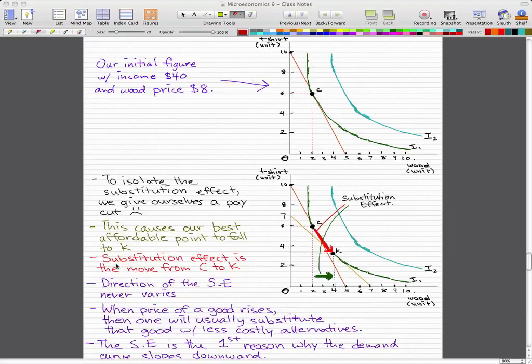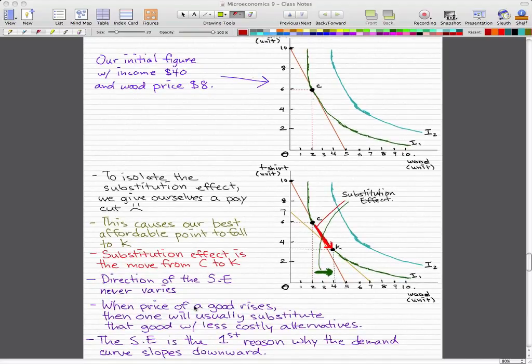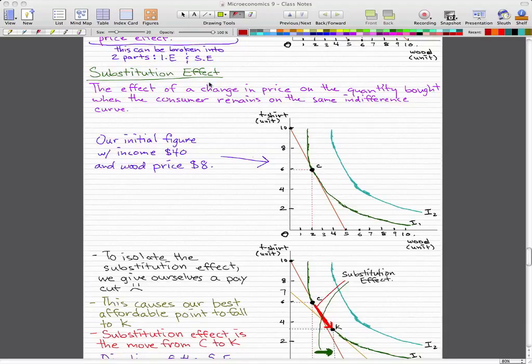Now the direction of the substitution effect never varies. When the price of a good rises, then one will usually substitute that good with a less costly alternative. And the substitution effect is the first reason why the demand curve slopes downward. I really can't think of any way to explain this more clearly. If you just want to know how it works, you can just memorize it: memorize the fall as the substitution effect and memorize what I'm going to show you for the income effect. Usually on a test, substitution effect is from a point C where something like giving a pay cut happens, which causes your budget line to shift and you move to some other point on the same indifference curve.